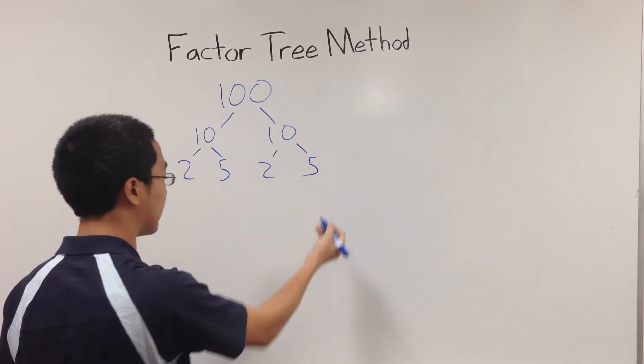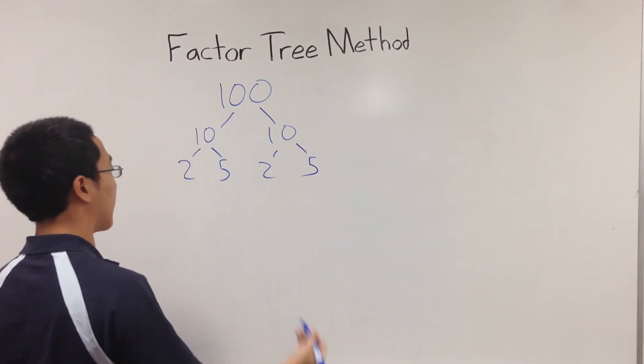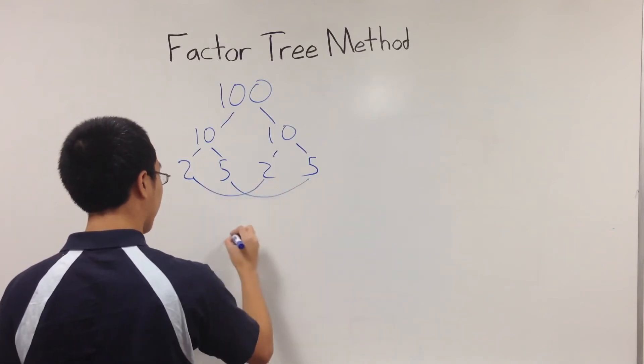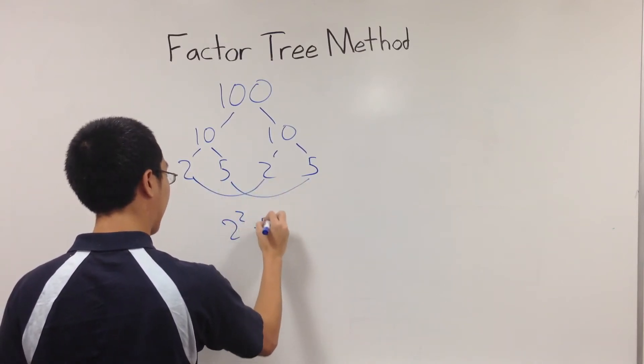So you're going to do 2, 5 and 2, 5. By doing this, you can combine them, the 2 squared times 5 squared.